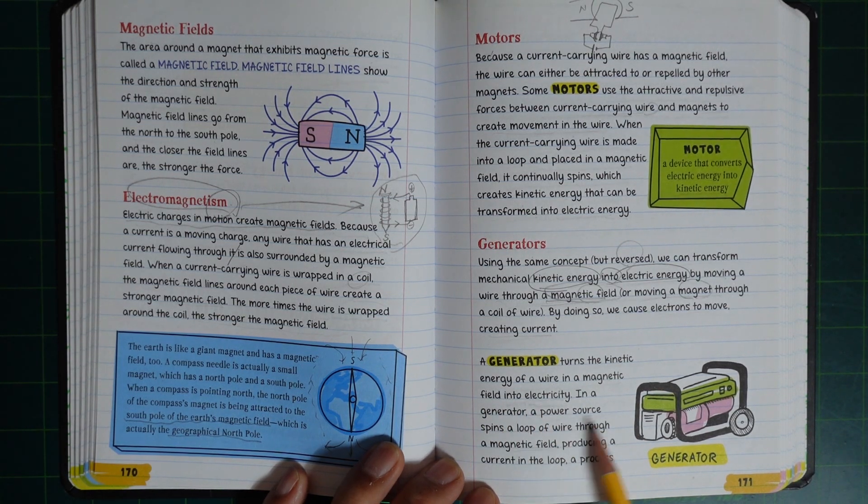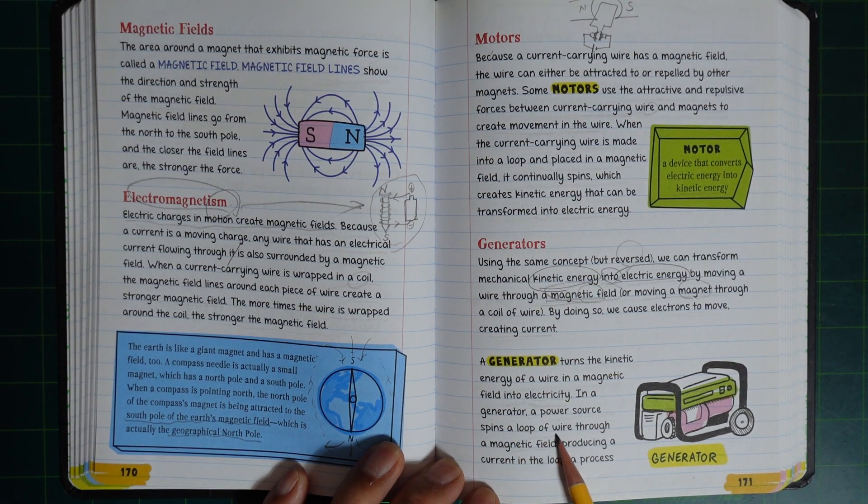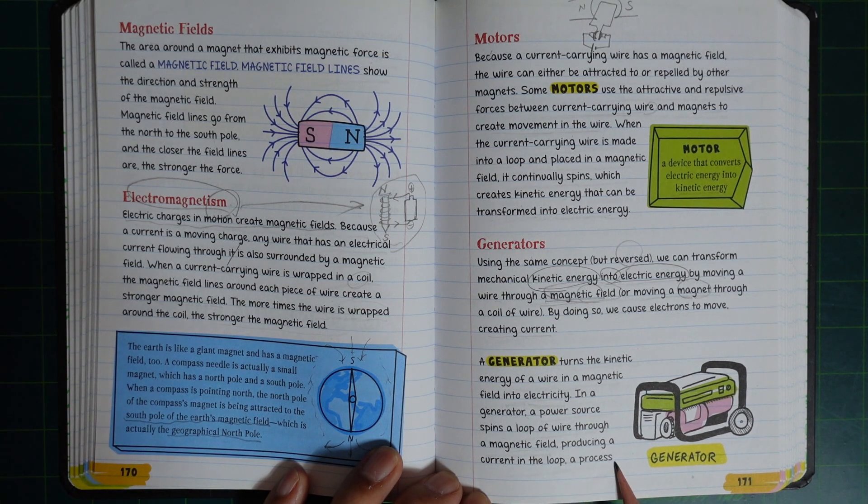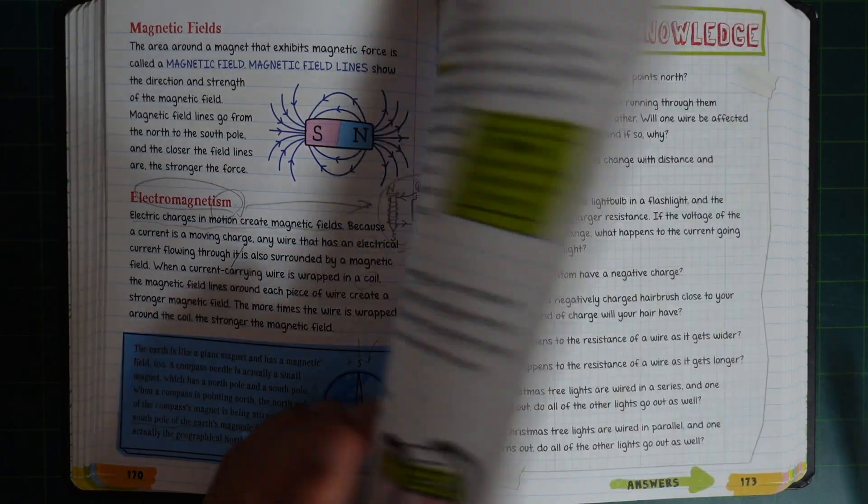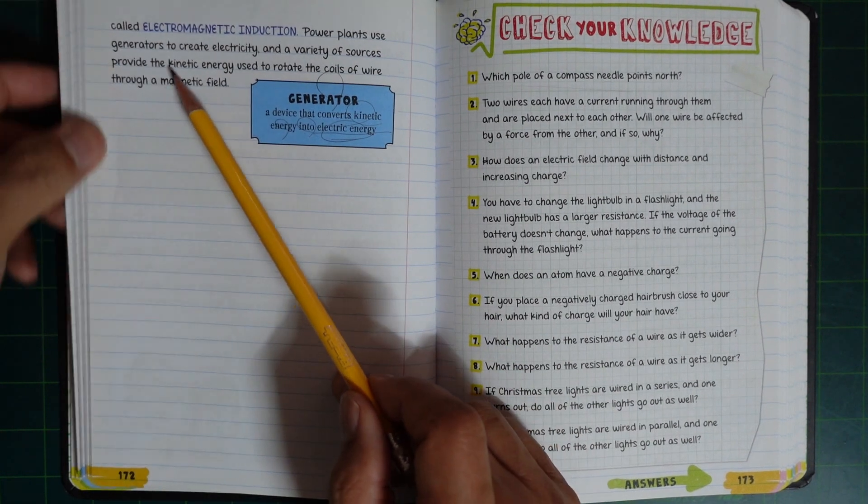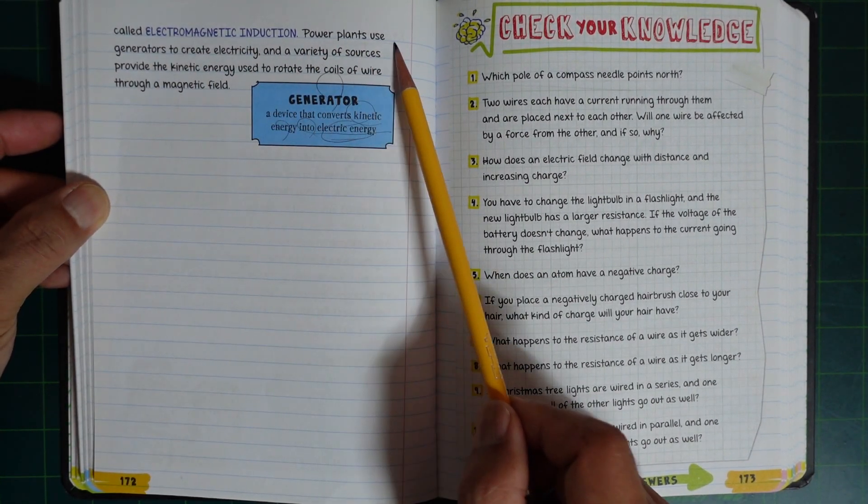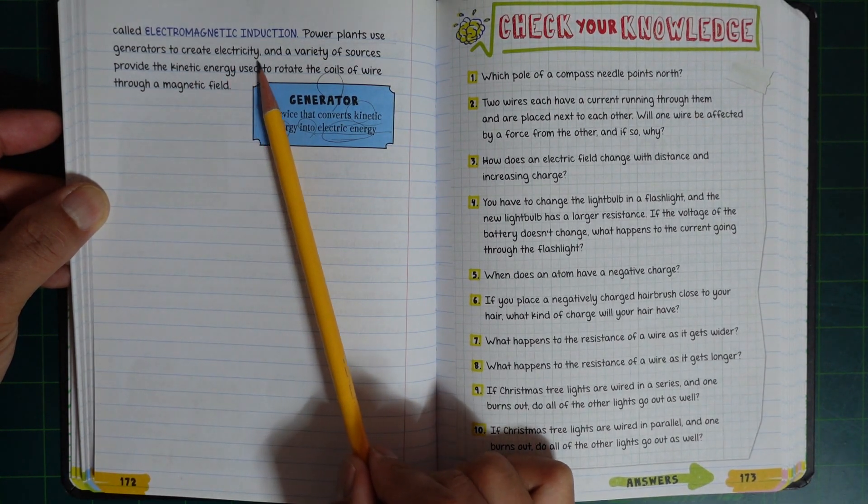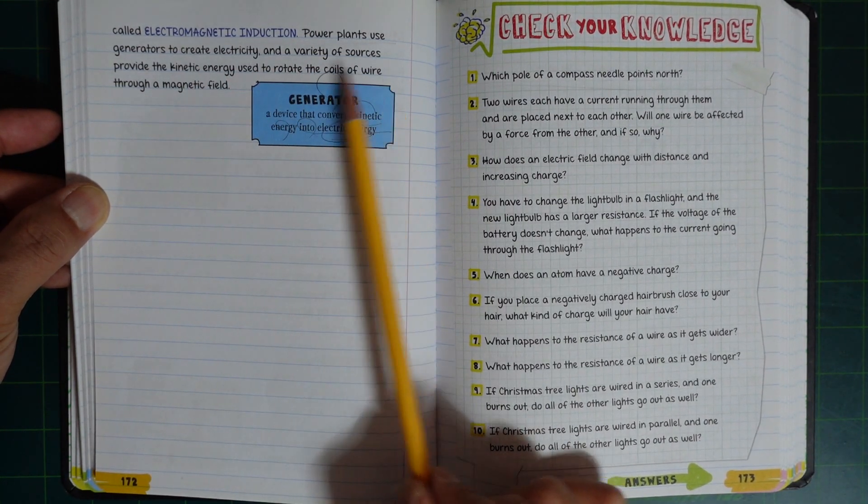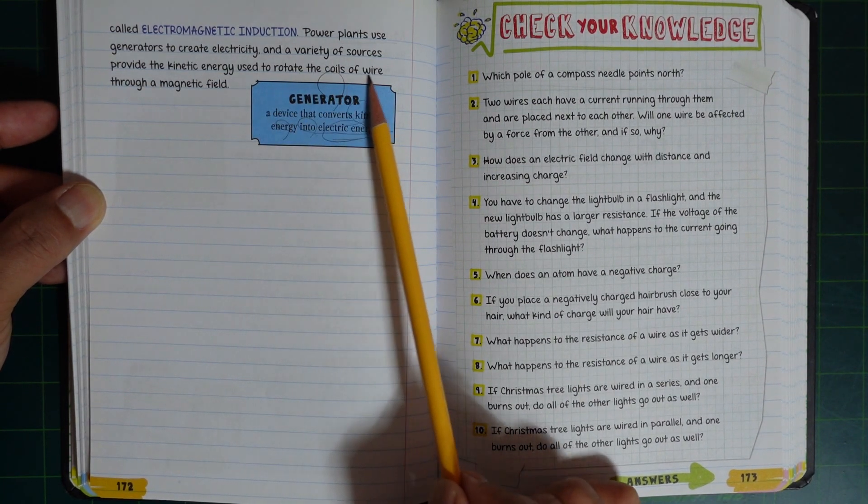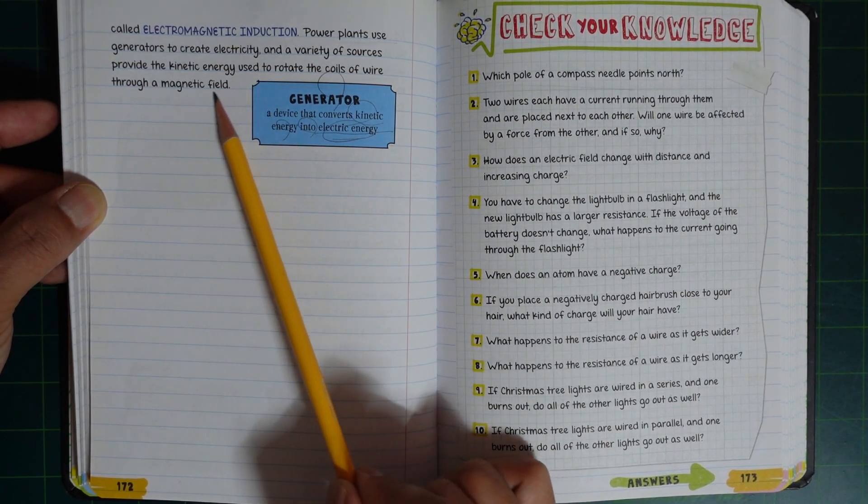A generator turns the kinetic energy of a wire in a magnetic field into electricity. In a generator, a power source spins a loop of wire through a magnetic field, producing a current in the loop. This process is called electromagnetic induction. Power plants use generators to create electricity, and a variety of sources provide the kinetic energy used to rotate the coil of wire through a magnetic field.